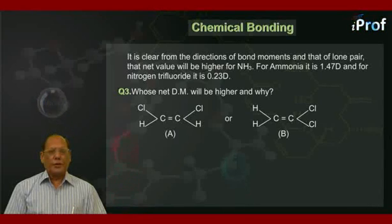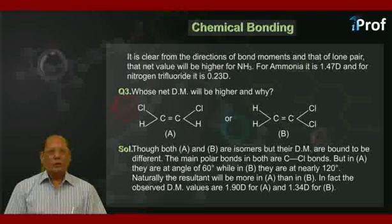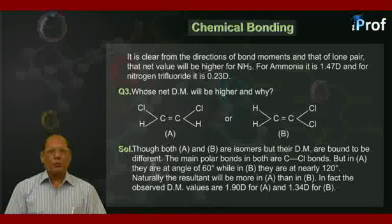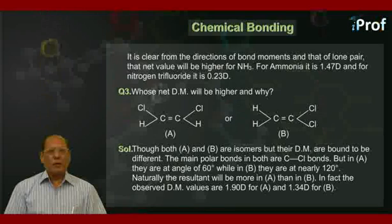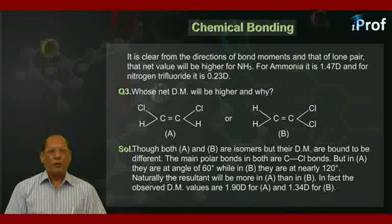The answer is, though both A and B are isomers, their dipole moments are bound to be different. The main polar bonds in both are carbon-chlorine bonds. But in A, they are at an angle of 60 degrees, while in B, they are at nearly 120 degrees.